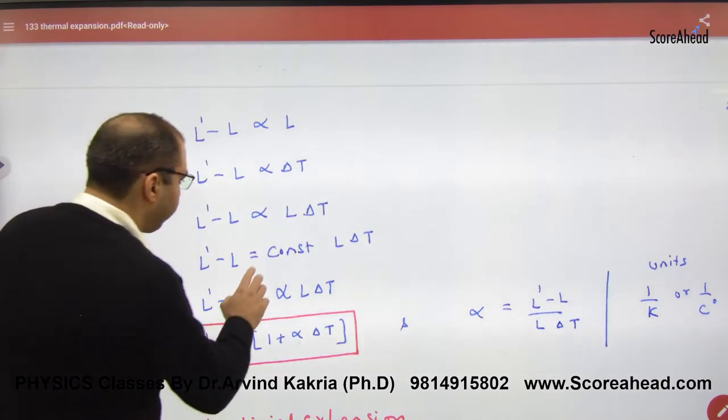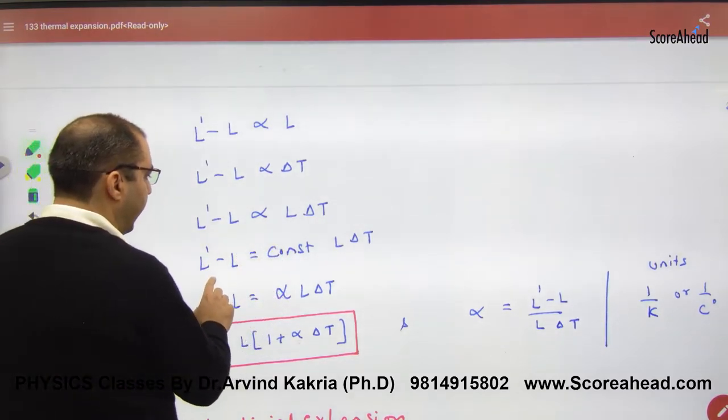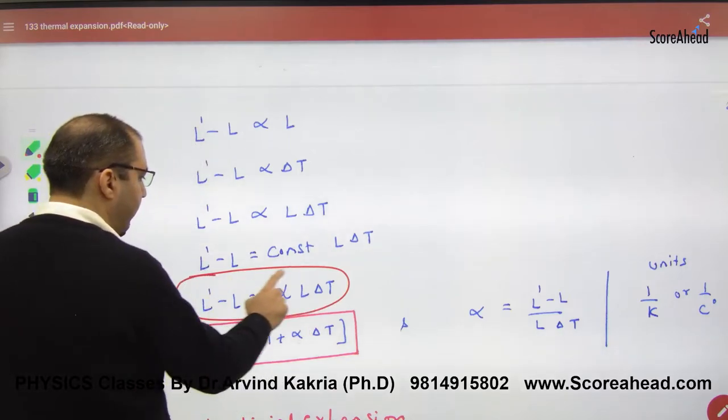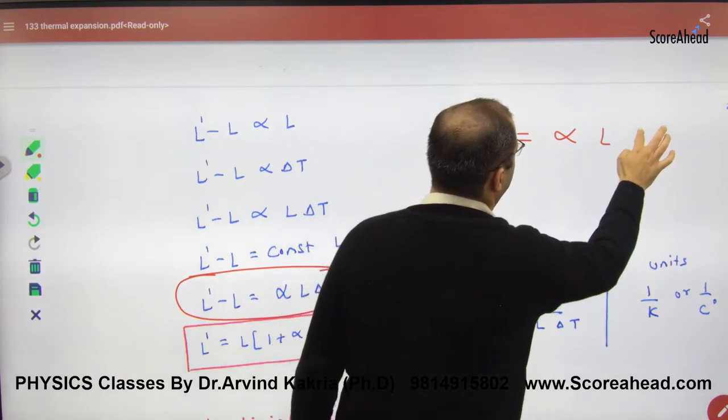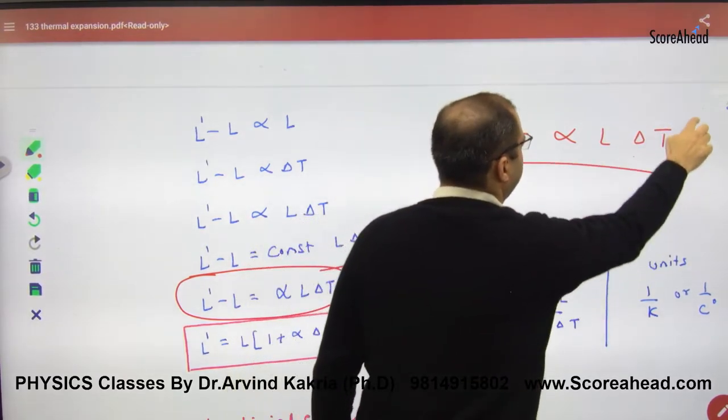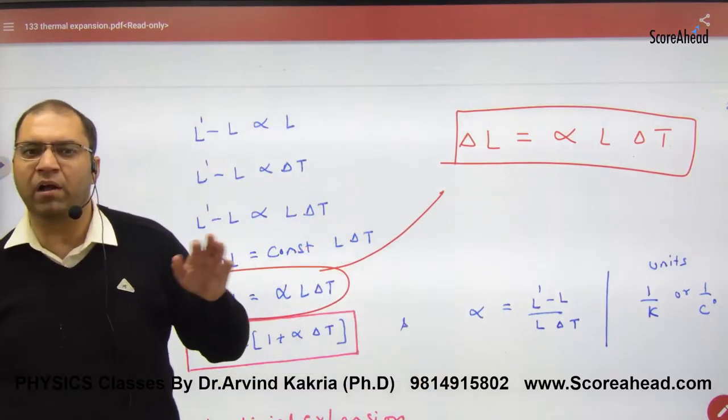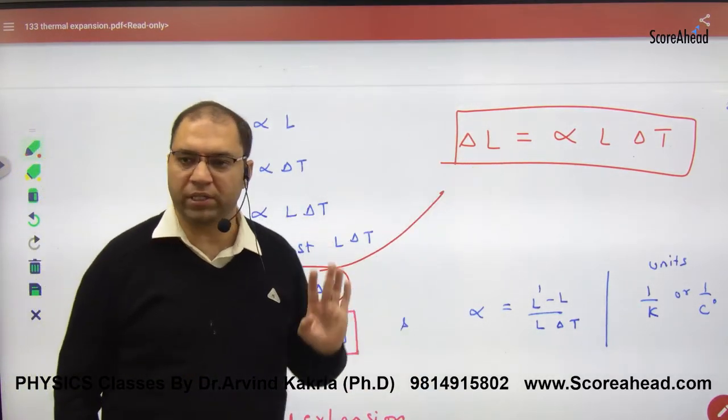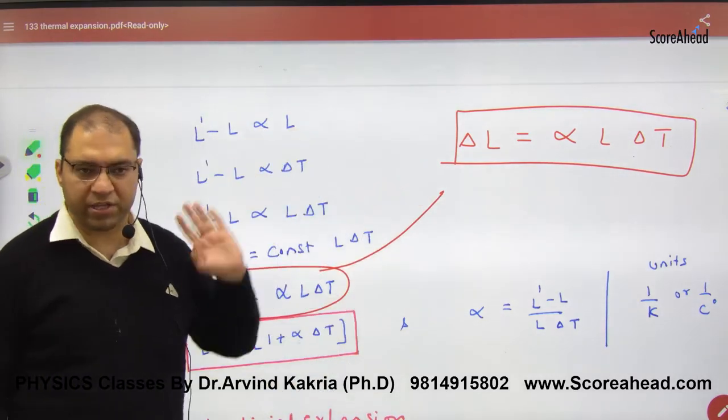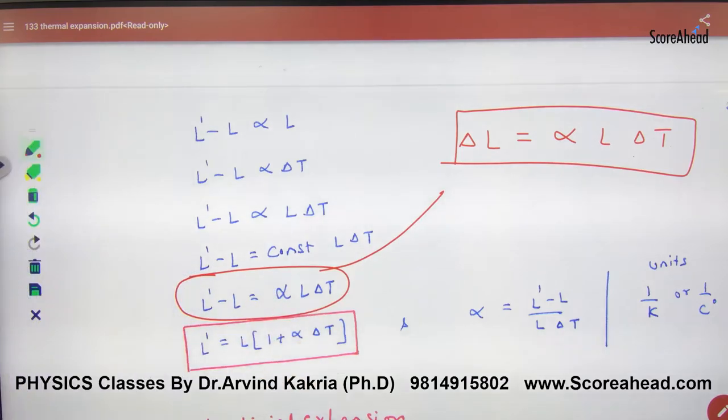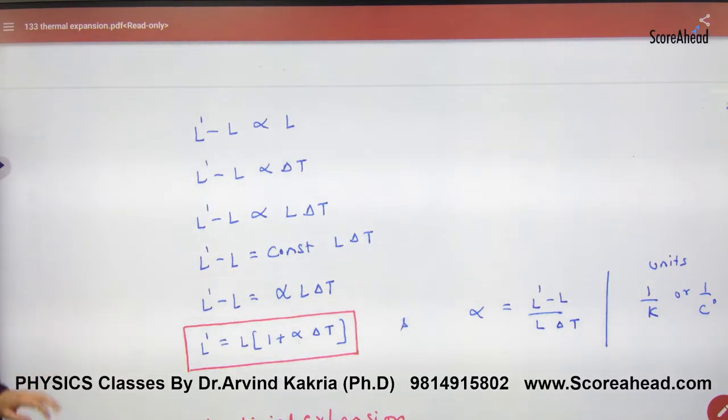In this case, we also use the formula ΔL. Let me write this formula: ΔL = α·L·ΔT. In your books, ΔL is directly given as α·L·ΔT. In today's assignment also, use ΔL in the box. Alpha is the coefficient of linear expansion, and this value is given in the question.